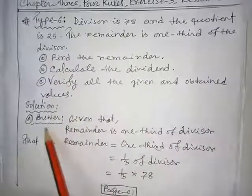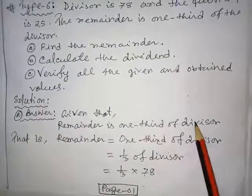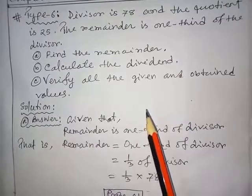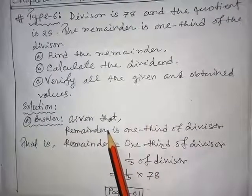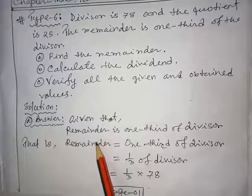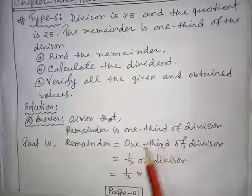Let us start the solution. Solution A. Given that the remainder is one-third of the divisor, we are getting this from the main information of the question. We can change this general sentence into a mathematical sentence. That is, remainder equals one-third of the divisor.